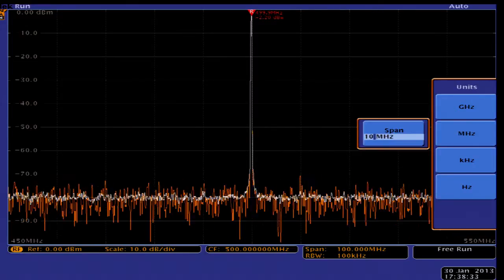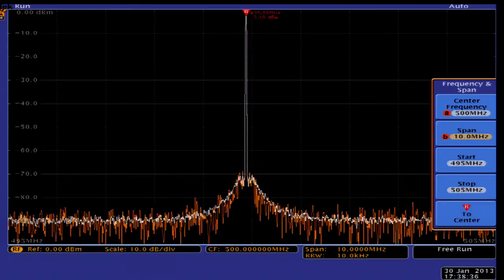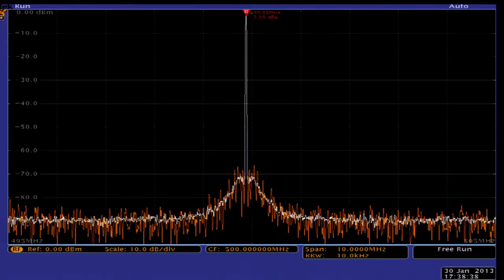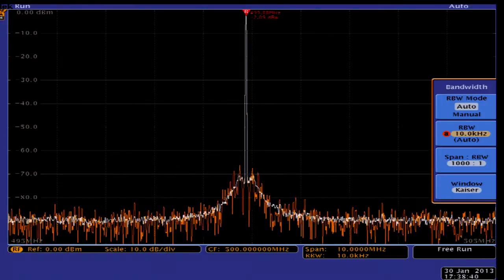With full control over their RBW, we can reduce the resolution bandwidth to 1 kHz so that we can see spectrum products greater than 90 dB down.